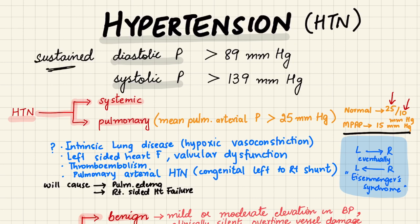The diastolic pressure should be greater than 89 mmHg and the systolic blood pressure should be greater than 139 mmHg to qualify as being clinically significant hypertension. Hypertension can be systemic and pulmonary — systemic is the usual; when we talk about hypertension we mean systemic hypertension.